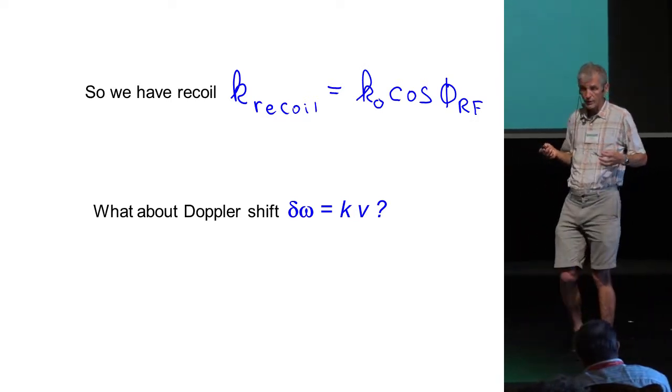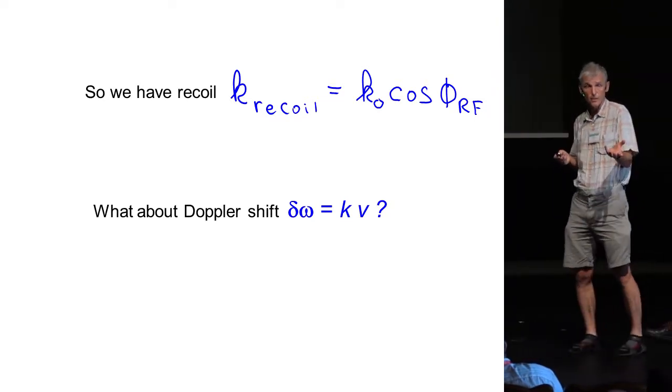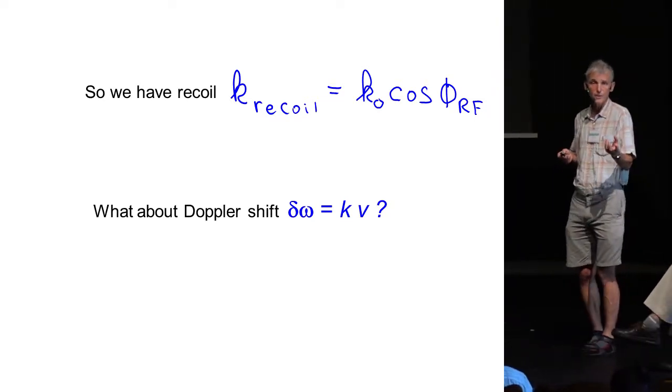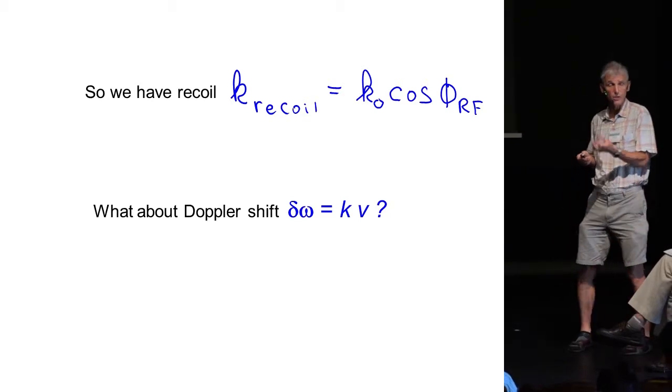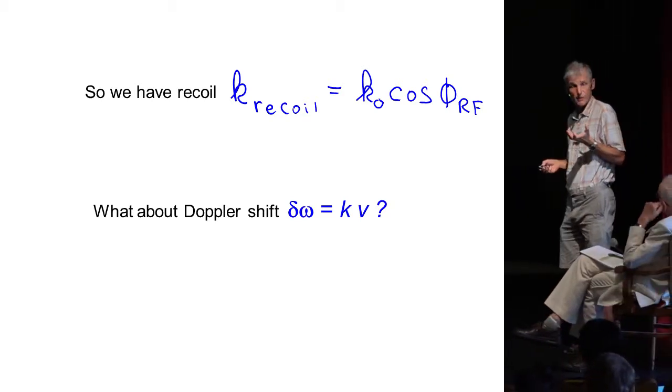So this is one property we know if you have an optical transition. An optical transition has recoil and now I've shown you how we can endow an RF transition with recoil.